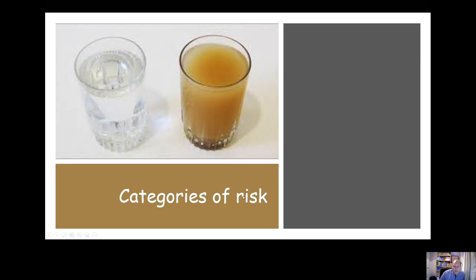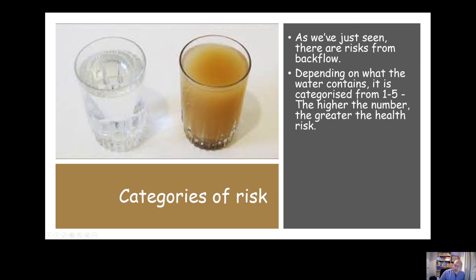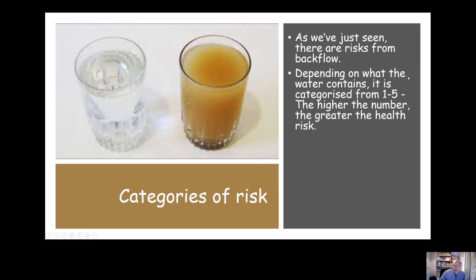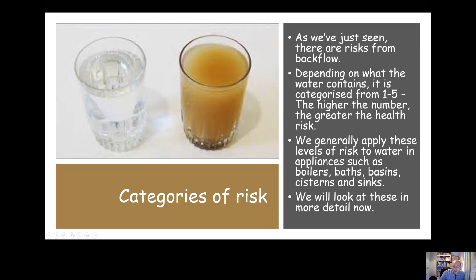We're going to look at how we can prevent that from happening, but firstly we'll look at the categories of water — the categories of risk. Depending on what the water contains, it's categorized from one to five. Essentially, one is cold, fresh, clean drinking water, while three to five represent potentially lethal water. We generally apply these levels of risk to the water in appliances — water in a boiler heating system, water in a bath, basin, or kitchen sink.